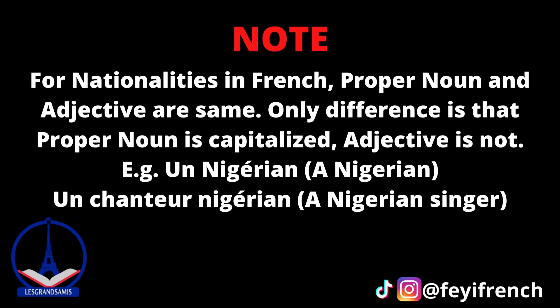For example, un Nigérien has the capital letter N because it is a proper noun — we are referring to a Nigerian. However, for un chanteur nigérien, we see that the N of nigérien is in lower case because nigérien is an adjective in that sentence.